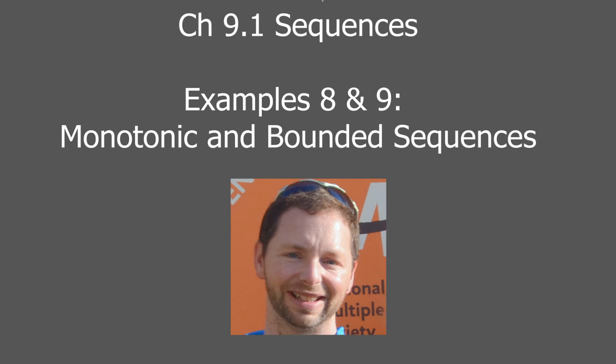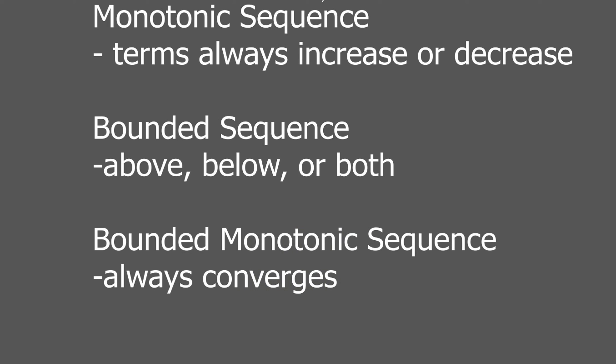All right, here are examples 8 and 9 from section 9.1 in sequences, monotonic and bounded sequences. Now, what is a monotonic and a bounded sequence anyway? Well, to be a monotonic sequence, that just simply means that the terms are always going to increase or decrease. So if you had 2 as your first term, your next term could be 3, and then 4, and then 5, and so on.